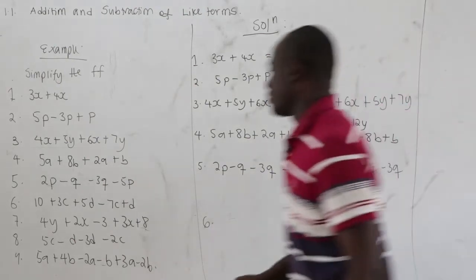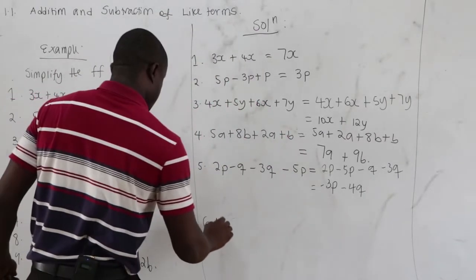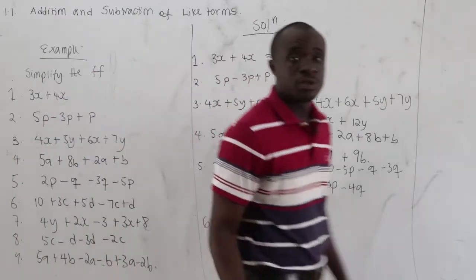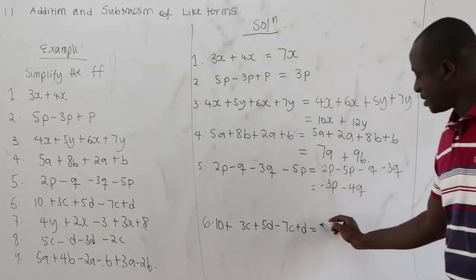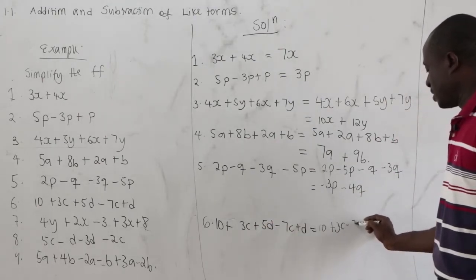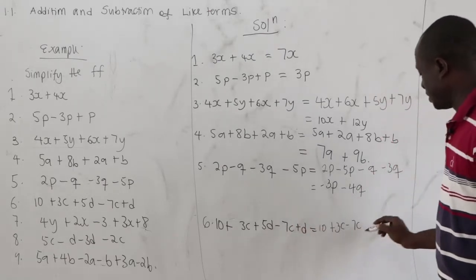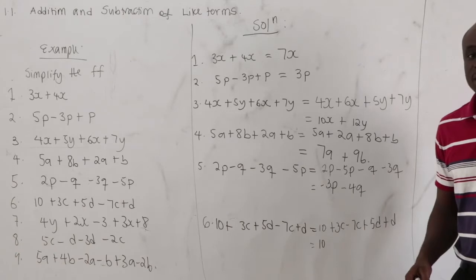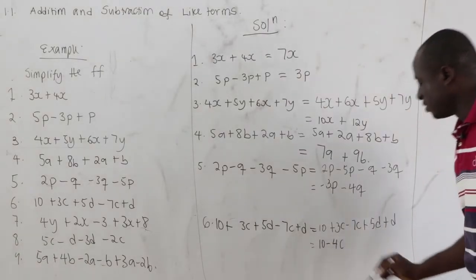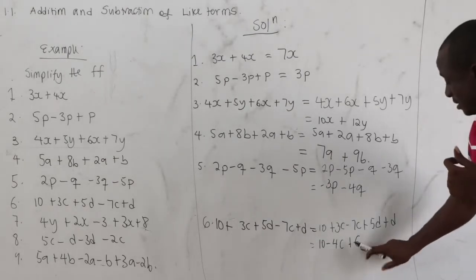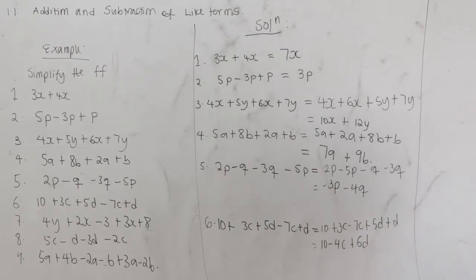The sixth question: 10 plus 3c plus 5d minus 7c plus d. Group like terms: we have 10 as a constant with nothing to add. Then 3c minus 7c equals negative 4c. And 5d plus d equals 6d.